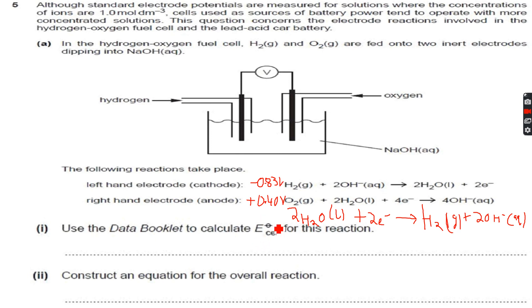We have to calculate the E cell. I have made it at the wrong place, the minus 0.83 volts. Now if you see, I'll have to invert this equation because minus 0.83 is less than 0.4.